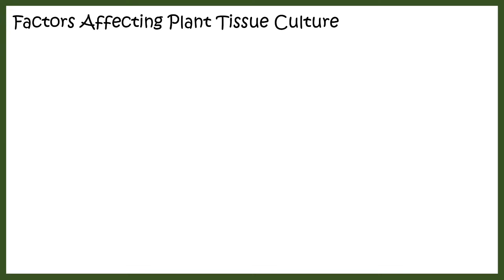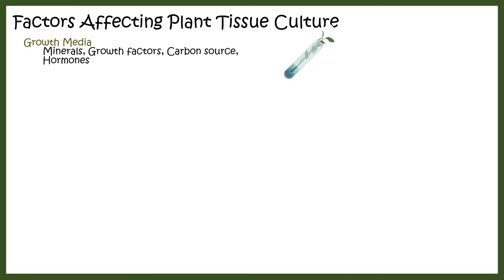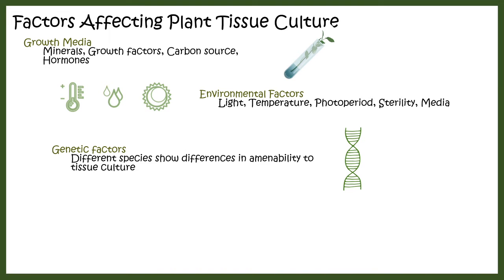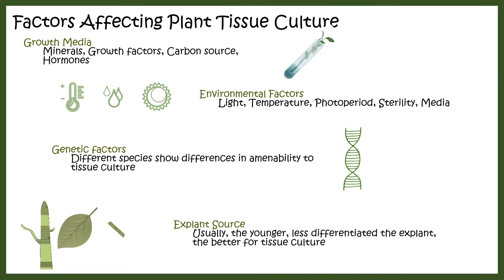Factors that affect plant tissue culture include: first, the growth media — since plants are grown in vitro, proper minerals, growth factors, carbon sources, and hormones must be present. Temperature, humidity, and sunlight conditions must also be met and provided artificially. Genetic factors are always present for proper growth, and the explant source matters — a less differentiated tissue has a greater chance of successfully forming a new plant.